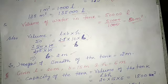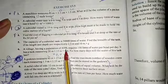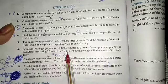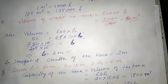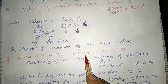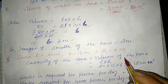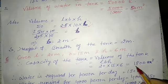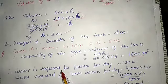The sixth question: a village with a population of 4000 requires 150 liters of water per head per day. It has a tank measuring 20 m × 15 m × 6 m. For how many days will the water last? The population is 4000. The volume of the tank is l × b × h = 20 × 15 × 6 = 1800 meter cube.